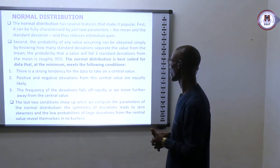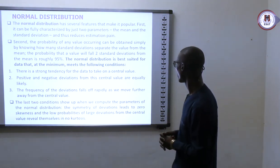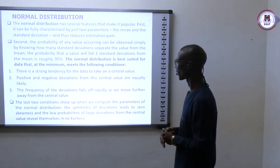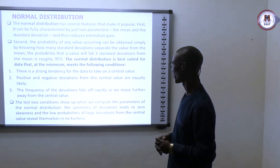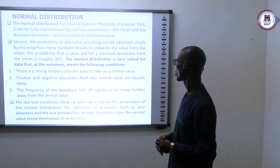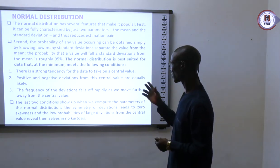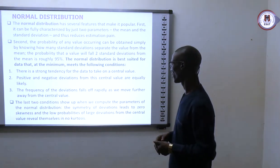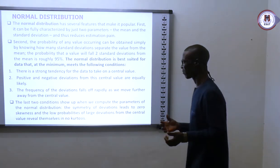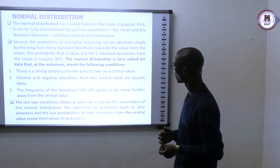The probability that a value will fall within two standard deviations from the mean is always roughly 95%. The normal distribution is best suited for data that meets certain conditions, including a strong tendency for the data to take on a central value — that is, the mean value — and so on.